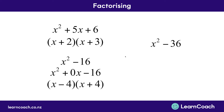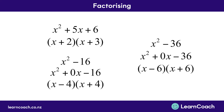Let's look at one more example. Here we have x squared minus 36. This is another example of a squared x term and a squared number, with a minus in the middle and no x term. We need two numbers that multiply to make negative 36 and add to make 0. The trick is to square root 36 to get 6, giving us two brackets: x minus 6 and x plus 6. The plus 6 and minus 6 add to make 0 and multiply to make negative 36.